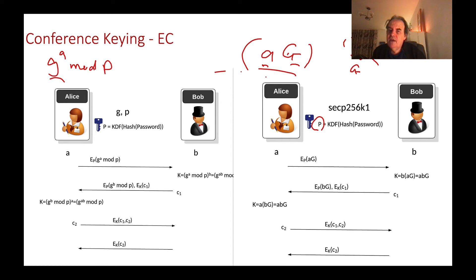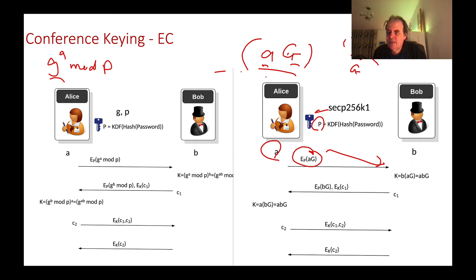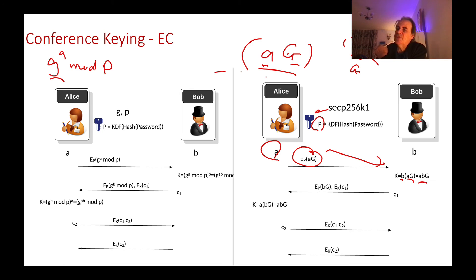We derive a key from the hashed password using a key derivation function — PBKDF2 is used here. We take the elliptic curve point that Alice defines: she generates A, a random scalar value, and gets a key which is a point on the elliptic curve, then encrypts that point using AES encryption. Bob decrypts it because he knows the password and can derive the same encryption key. He then multiplies the value Alice sent by his scalar B to get ABG as the point on the elliptic curve — that's the key both Bob and Alice will use. We could just use the x-coordinate if wanted.